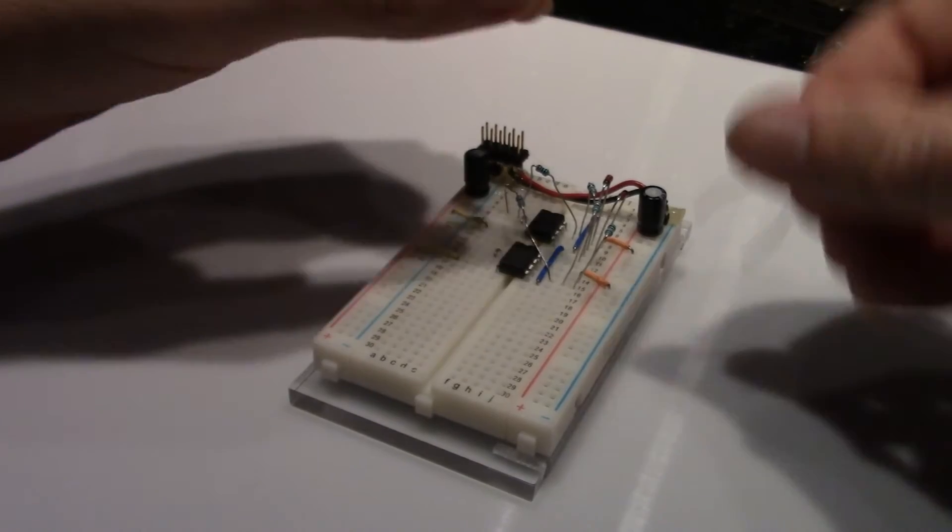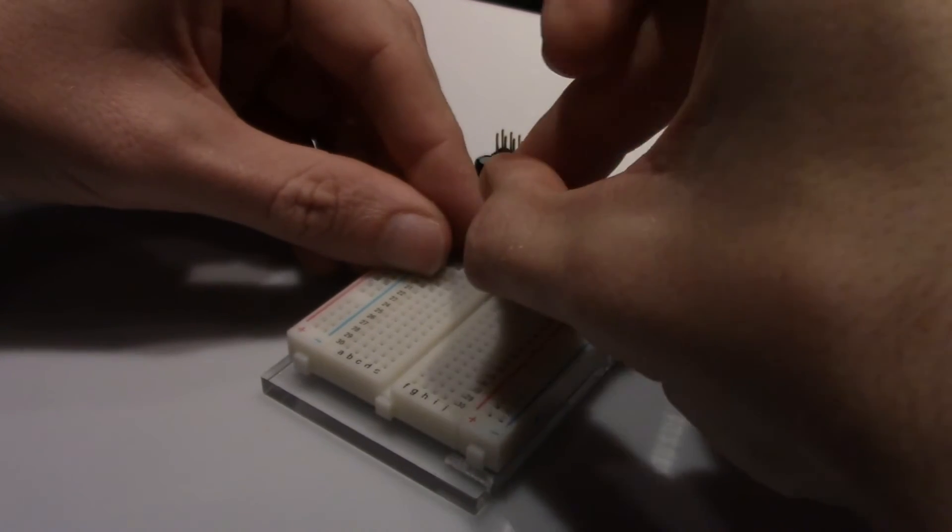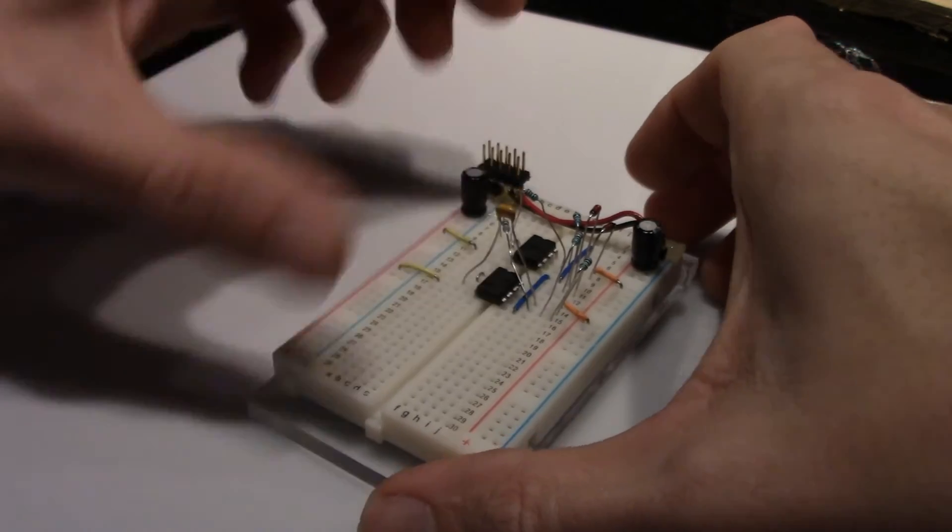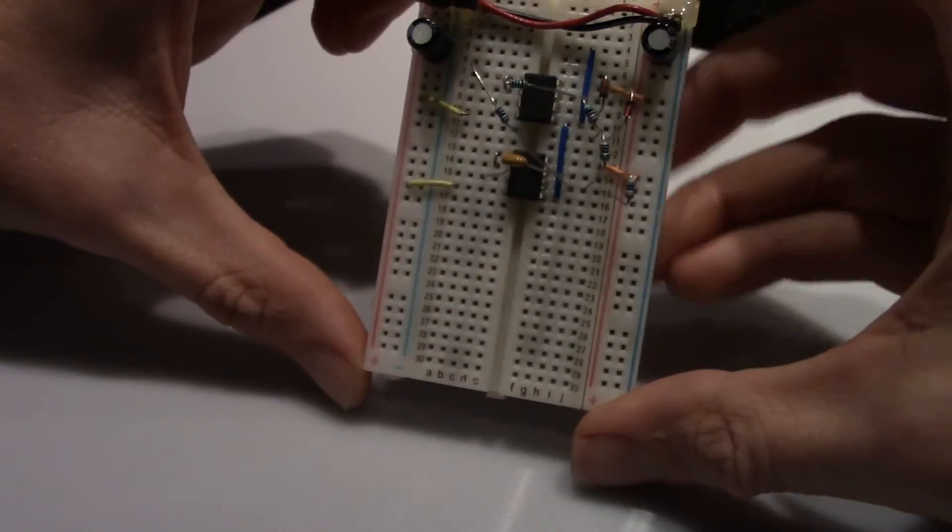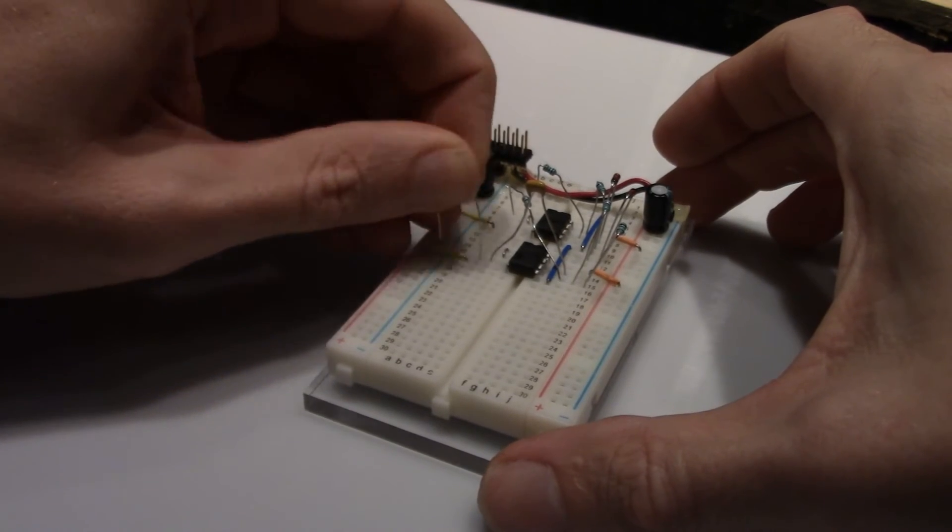Next a one microfarad capacitor from the output of the right op amp to the positive input on the left. The final part of this breadboard is a 100k resistor from the positive input to ground.